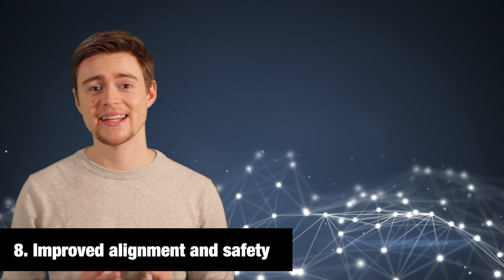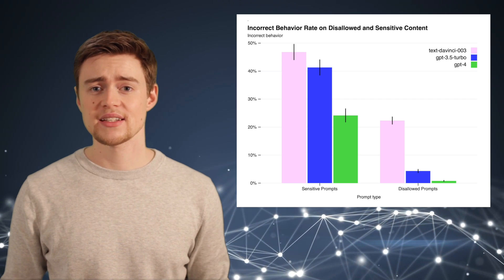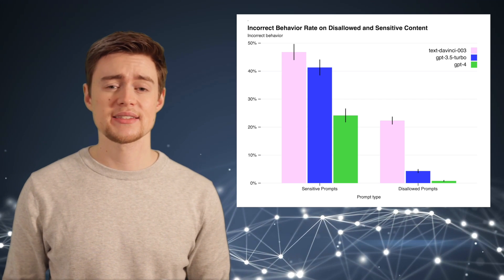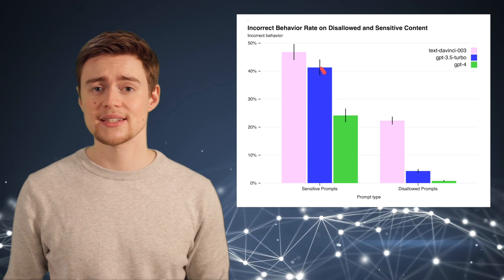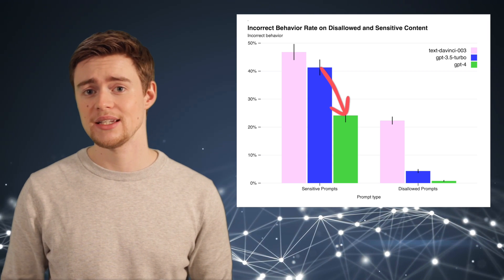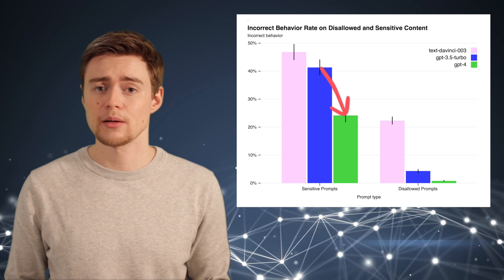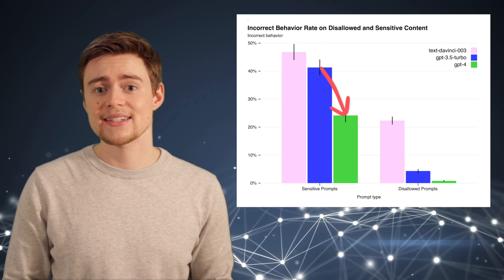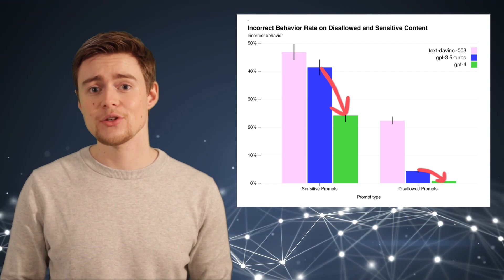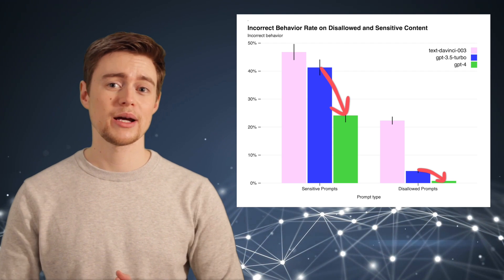Number eight is about improved alignment and safety. Here, OpenAI made significant progress. For sensitive requests like medical advice and self-harm, GPT-4 follows OpenAI's policies 29% more often than ChatGPT. And for disallowed prompts, like asking for instructions on building a bomb, they decreased the model's tendency to respond to such prompts by 82%. These improvements were achieved by building special moderation classifiers that use the GPT-4 model itself.